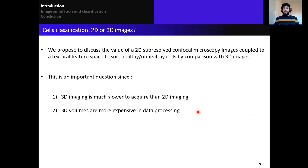Based on this study, I propose to discuss the value of 2D sub-resolved confocal microscopy, coupled with textural feature space to sort healthy and unhealthy cells by comparison with 3D image volumes. This question is very important because when we are acquiring these 3D volumes, it is much slower than acquiring 2D images because we have to scan all the planes of the cell. And also, processing these 3D volumes is more expensive in time and memory load. So, do we really need 3D images or can we use 2D images to have best classification performance between cells?